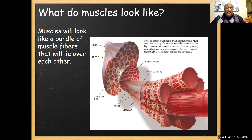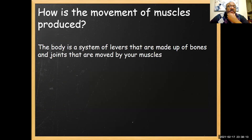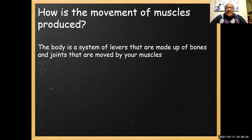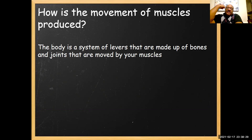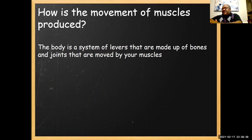For your muscle to flex, a whole lot of things have to happen. Movement of muscles is produced by a system of levers. For example, when you flex your bicep, the muscle in the back has to relinquish a little bit for this muscle to shorten. When you extend your arm, it's almost the opposite — the bicep relinquishes and the tricep in the back tightens.